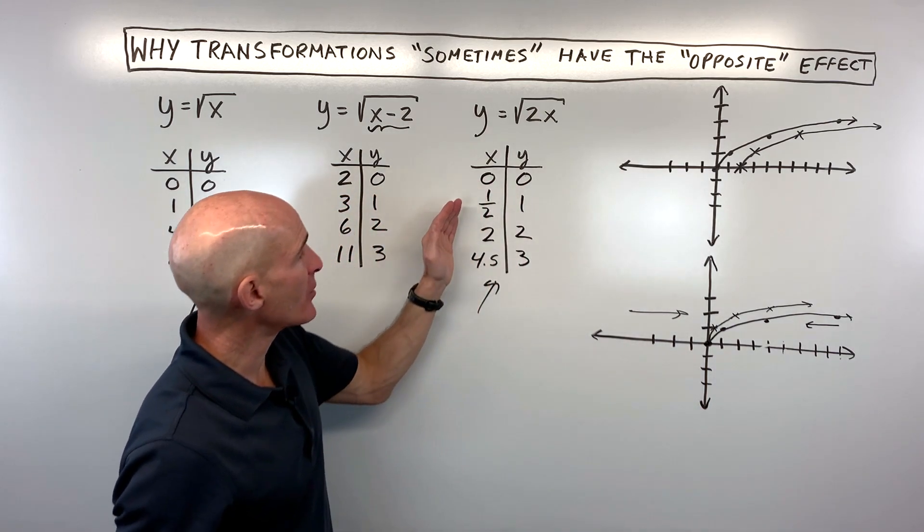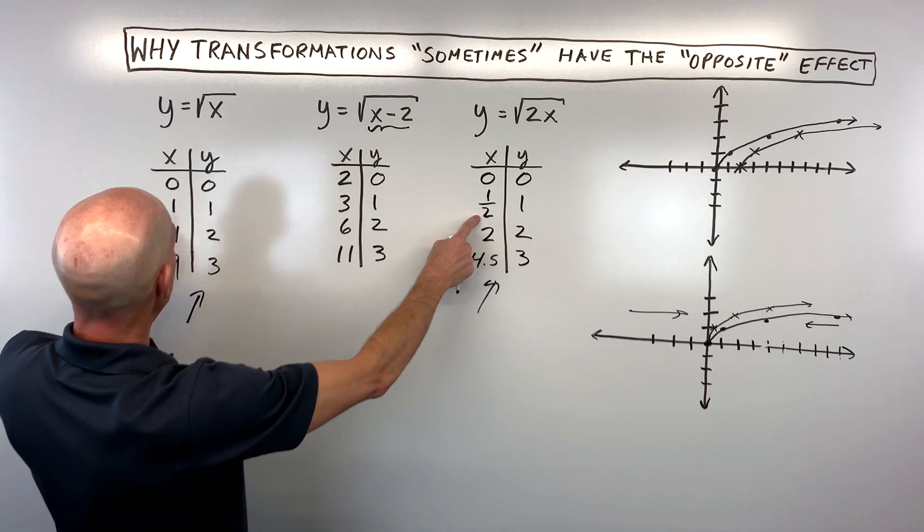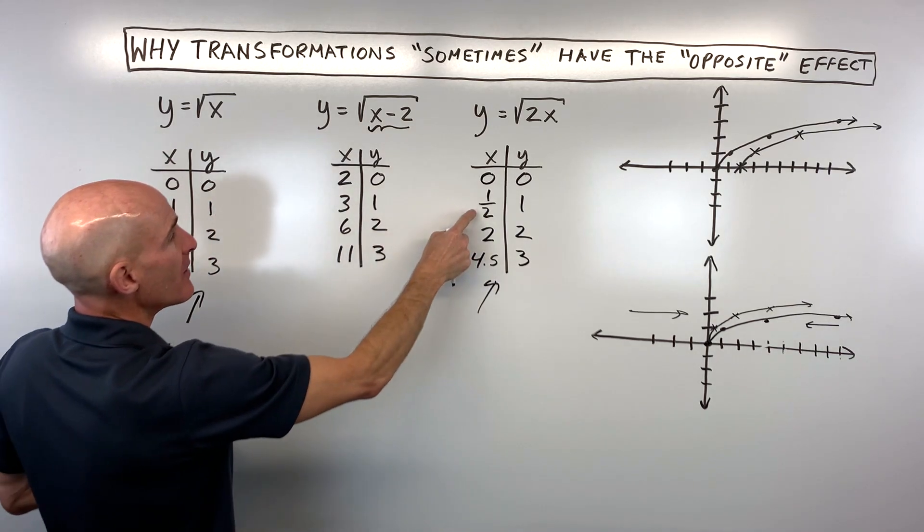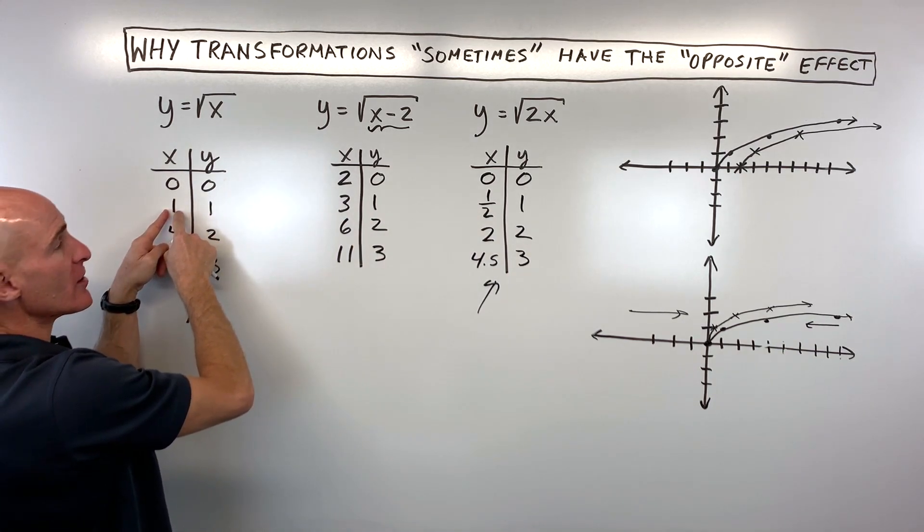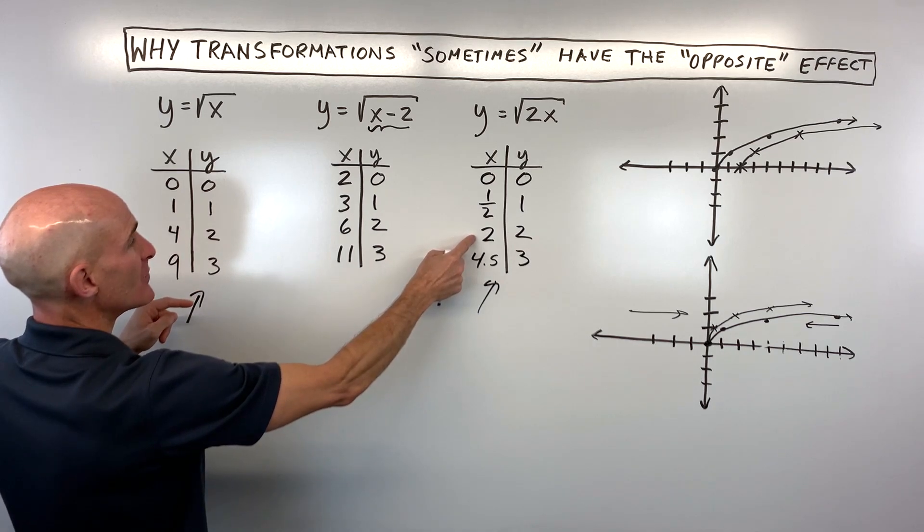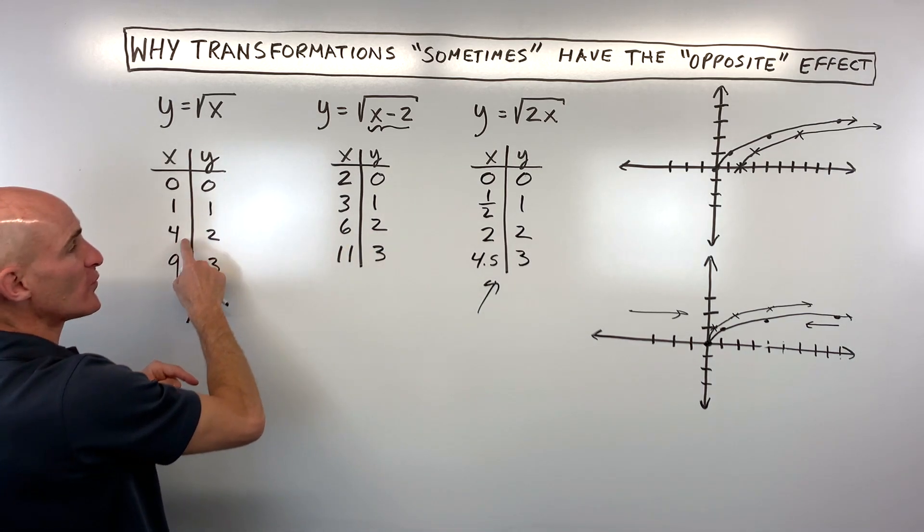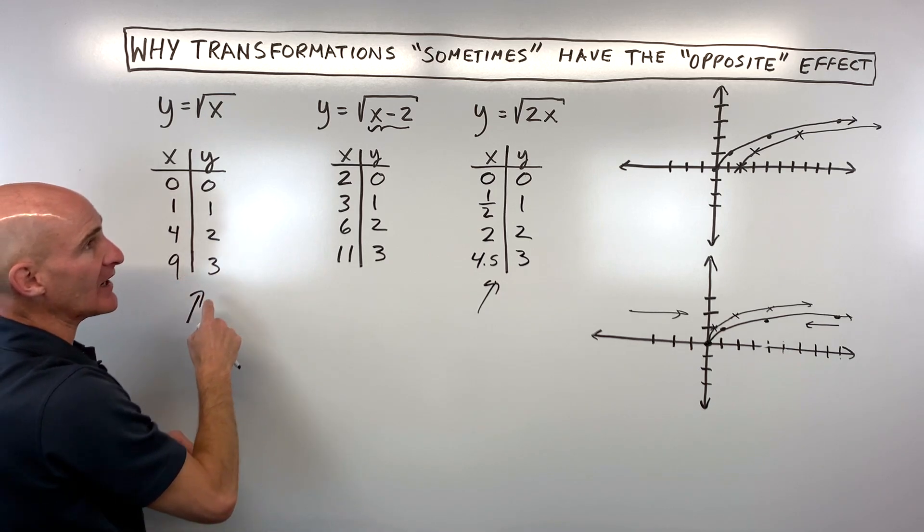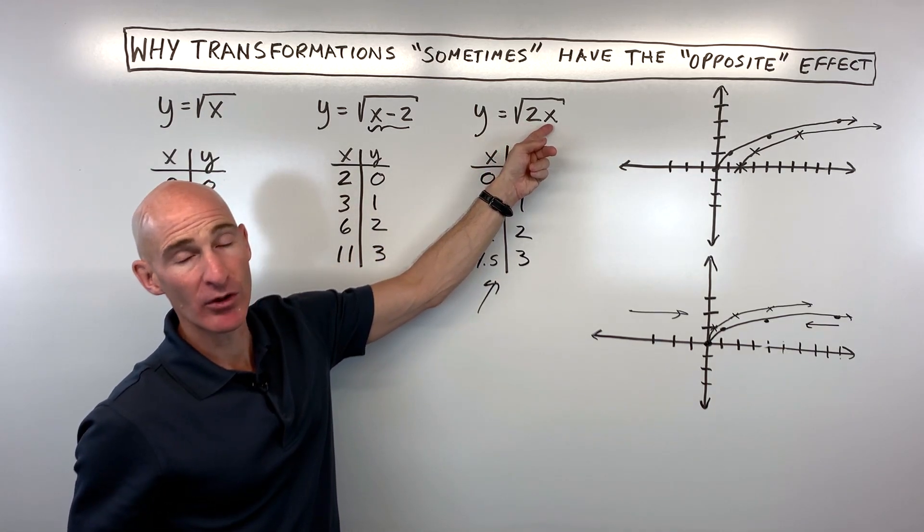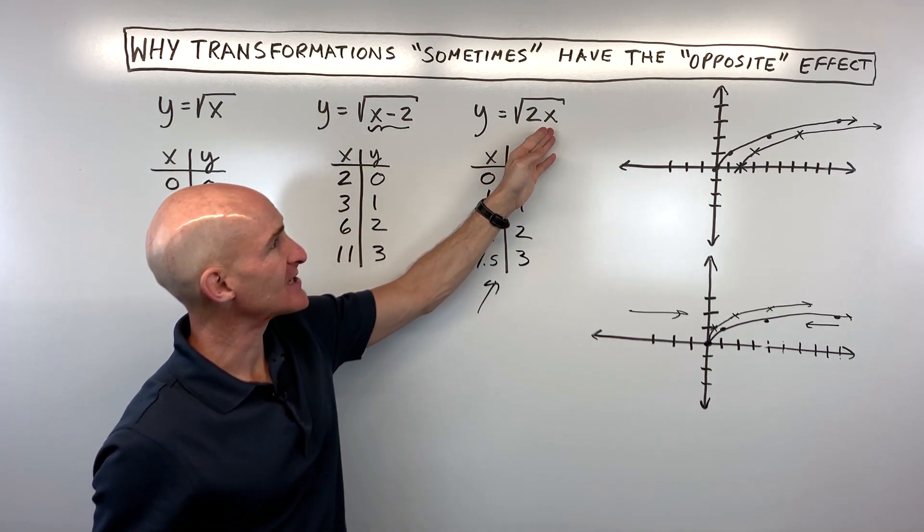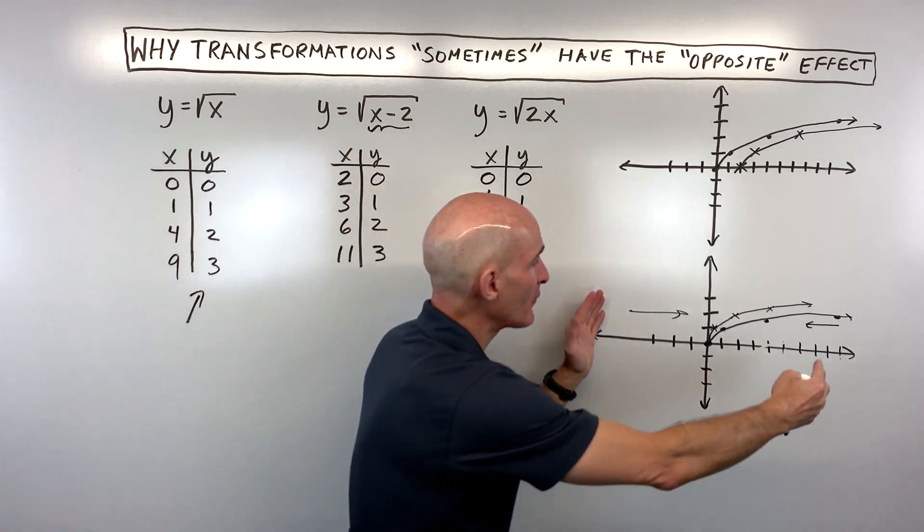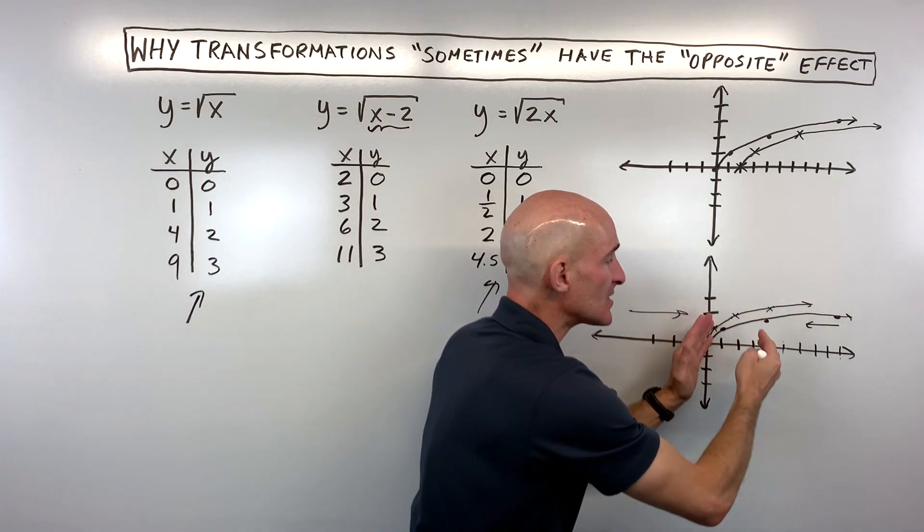You might be asking, "Why is that?" Notice on the table: in order to get a y value of 1, the x value had to be half as much as in the parent function. To get an output of 2, the x value had to be half as much—this was 2, this was 4. Same here: this was 4.5, this is 9. So when you look at the equation, it looks like you're doubling, but what's happening is the x value has to be half as much to yield that same output. Graphically, that shrinks it horizontally.